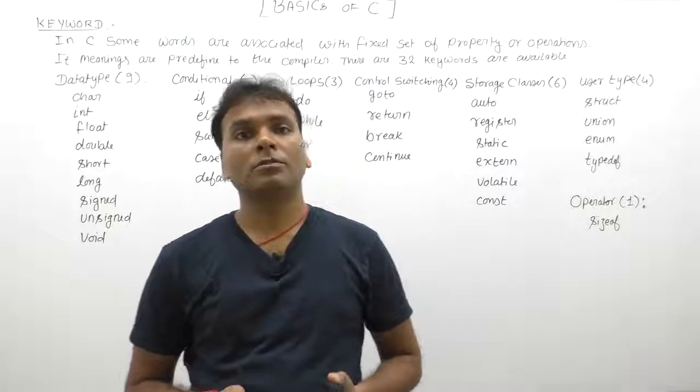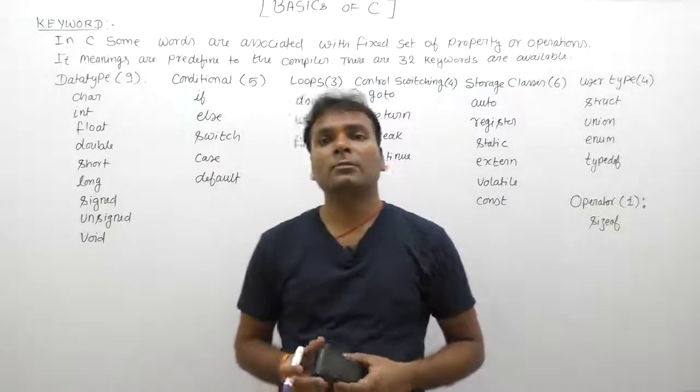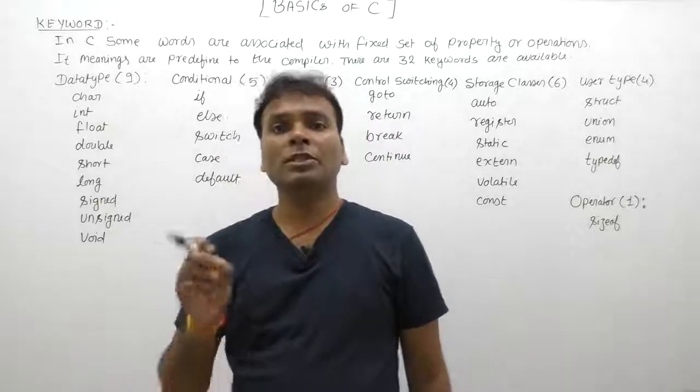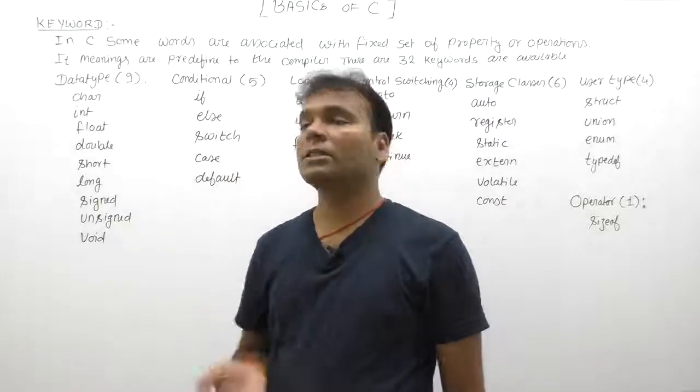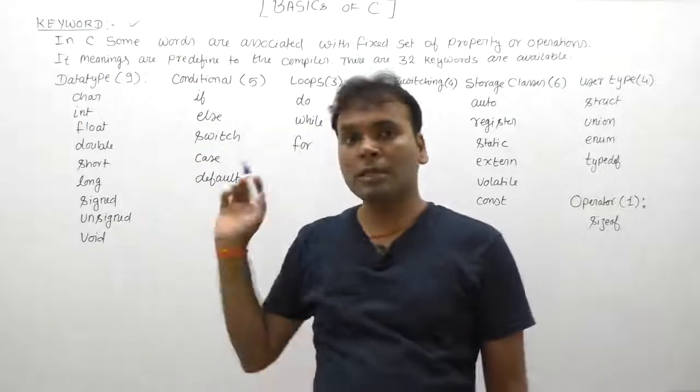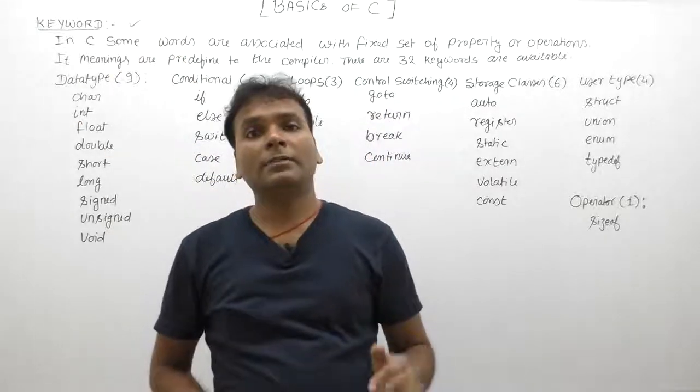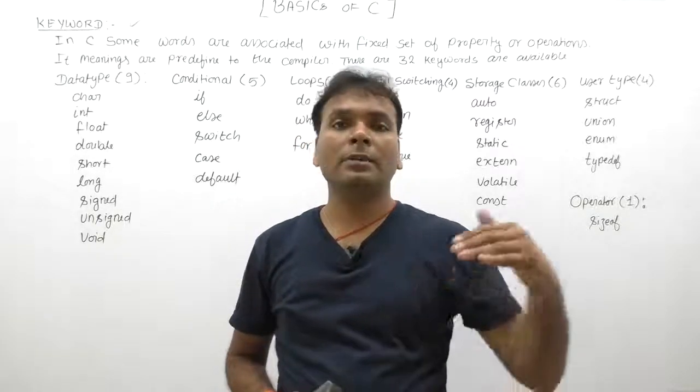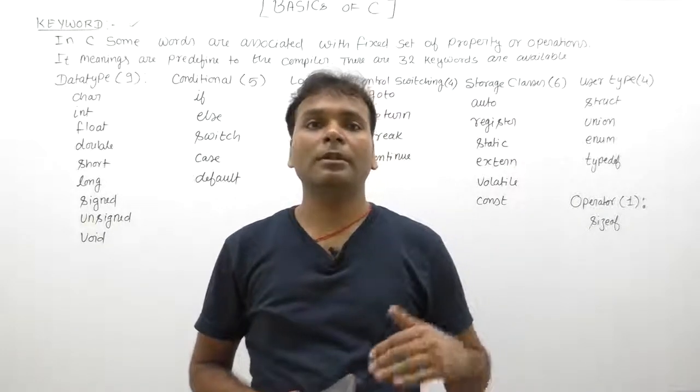In C language, there are 32 reserved words. These reserved words are considered as keywords in C. These 32 keywords are available for different operations and different statements.